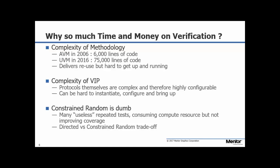The AVM when it was first released in 2006 — more than 10 years ago — had 6,000 lines of code. The UVM in 2016 had 75,000 lines of code, and I suspect it's still growing. The UVM has delivered all sorts of advantages: it has developed a single and consistent industry-wide methodology, and it does deliver exchangeable verification IP. But because of its complexity, it is hard to get up and running, and that's one reason for this growth in the number of people doing verification.